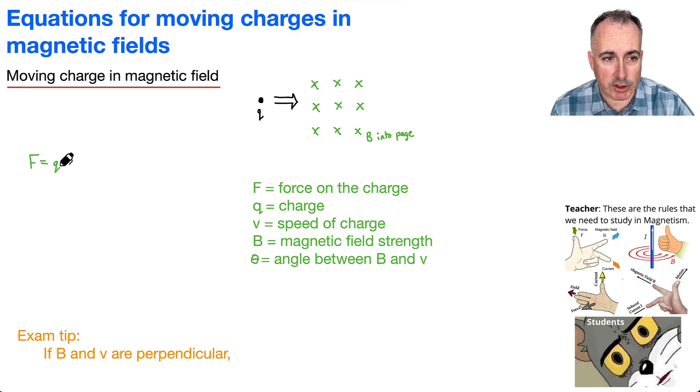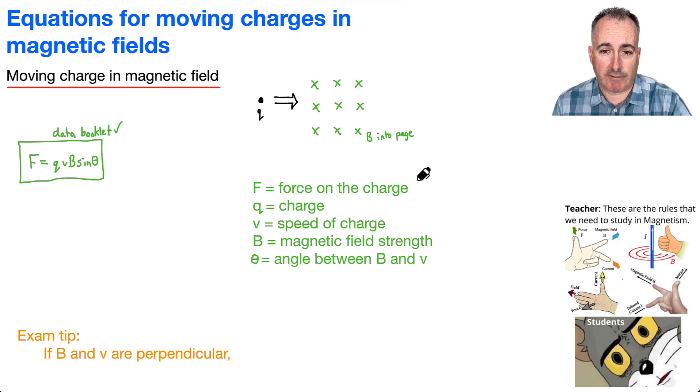We say F equals QVB times the sine of theta. Okay, so what kind of variables do we have? Well, F is the force on the charge, so that's going to be in newtons. Q is the charge, that'll be in coulombs. V is the speed of the charge, like how fast it's actually moving, so that'll be meters per second.